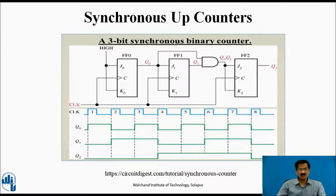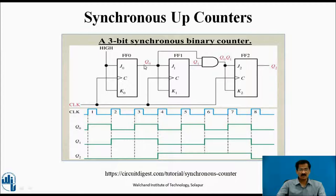This is the Synchronous Up Counter — a 3-bit synchronous counter using 3 flip-flops: FF0, FF1, FF2. Inputs are J0, K0, J1, K1, J2, K2, and outputs are Q0, Q1, Q2. Being a synchronous counter, the clock signal is simultaneously connected to all flip-flops. J0 and K0 are permanently connected to logic 1, so it acts as a T flip-flop and the output toggles on every clock pulse. Q0 output is given as input to the second flip-flop, and Q0 AND Q1 are ANDed together and given as input to the third flip-flop.